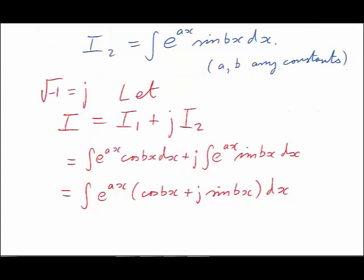Oh, wow, that's interesting. Cos plus j sine. We've got a name for that expression. It's called cis, cis of bx. But we also have another way of writing cis. Cis of bx is the same as e to the power jbx. So let's write this integral now using that exponential notation.